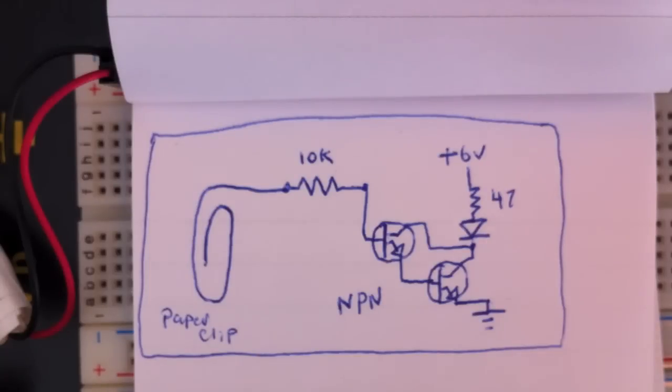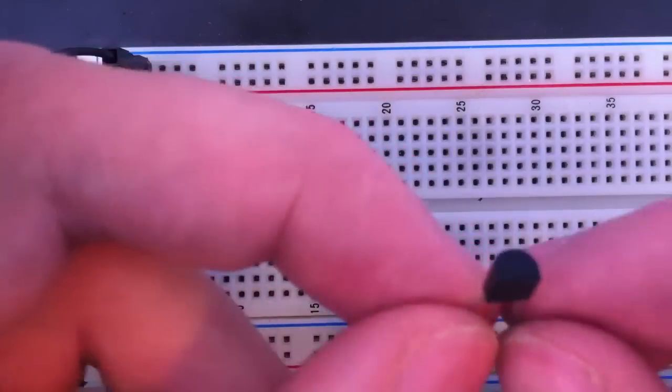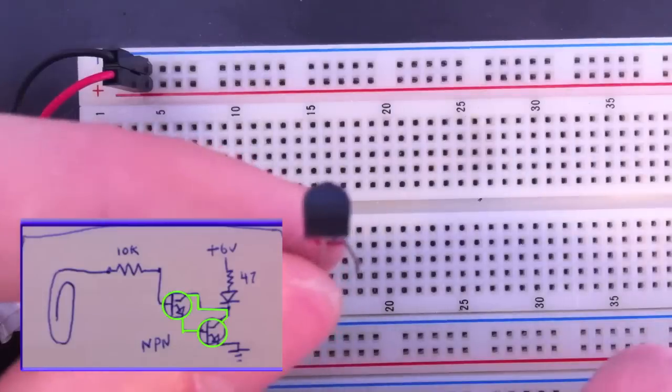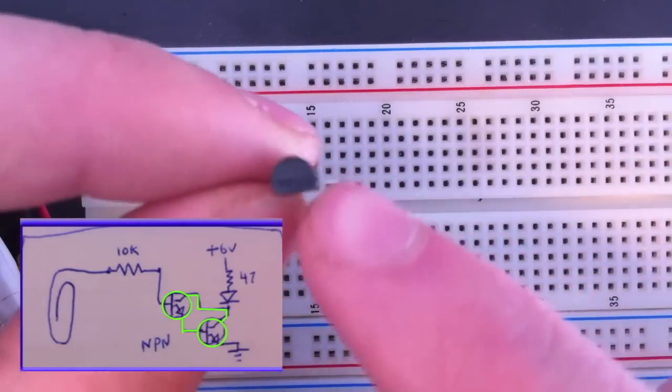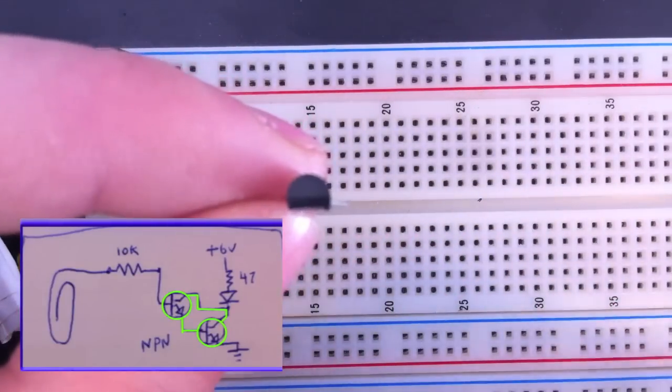I'll be setting up this circuit according to this schematic. Let's first start by setting up the Darlington pair. If you have your transistor and the flat side is facing towards you,